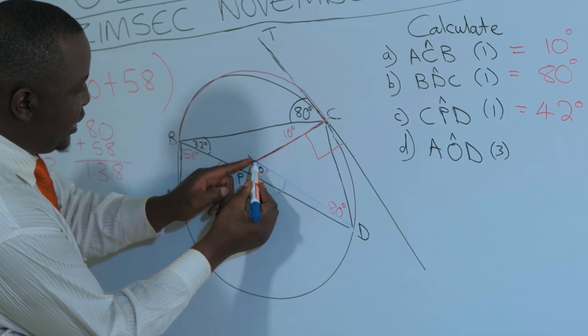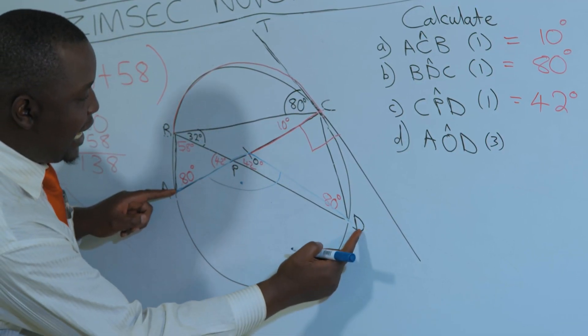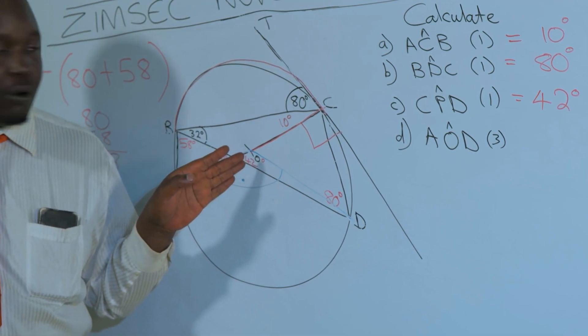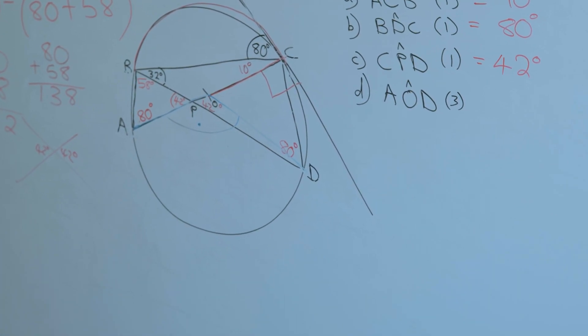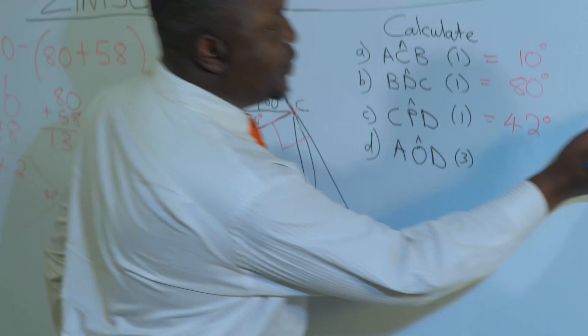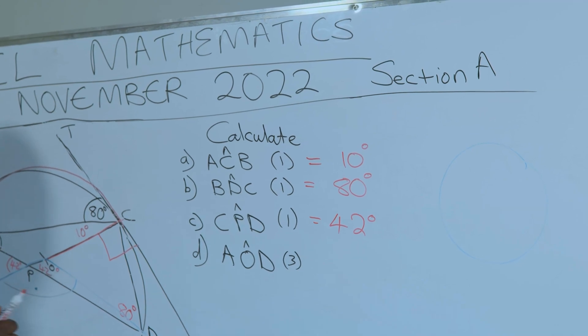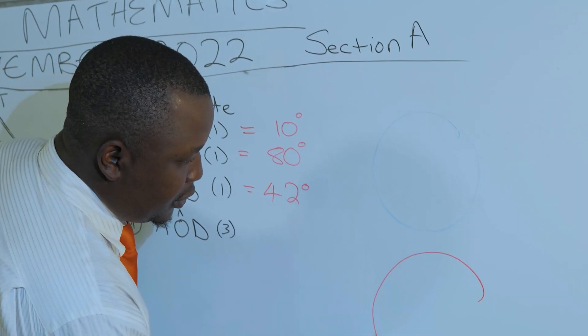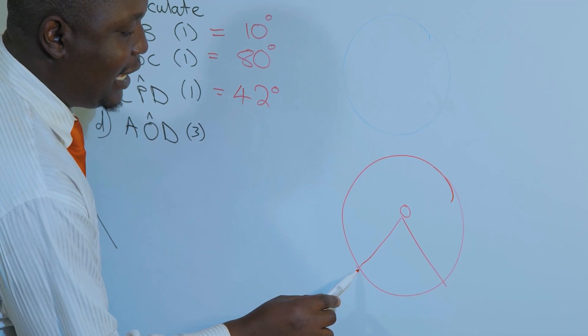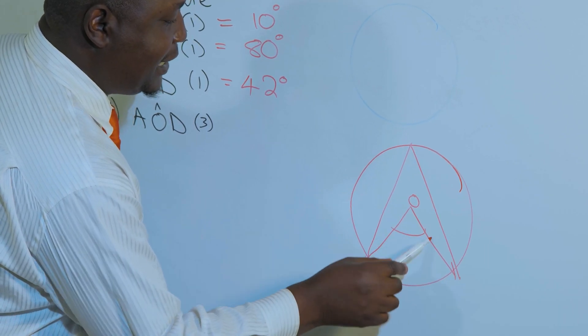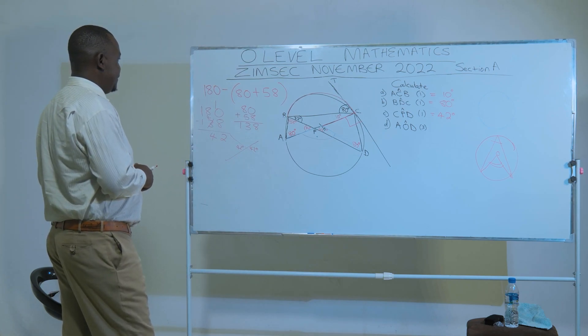And I'm sure you are familiar with this theorem. Let me use this red font. The angle that is being subtended by an arc at the center is twice the angle that is being subtended at the circumference. So this is the theorem that we are going to use in this question.